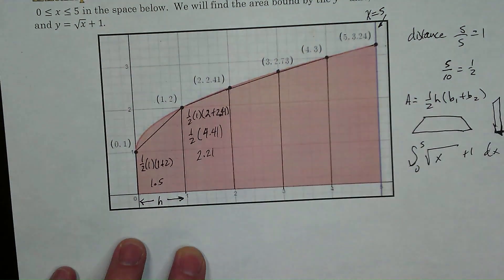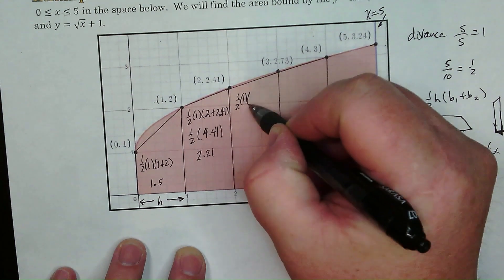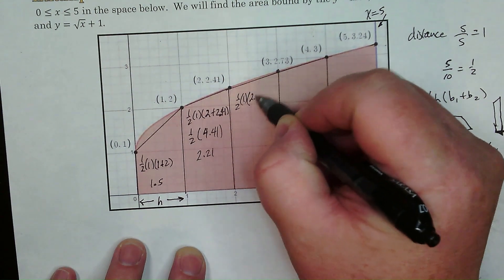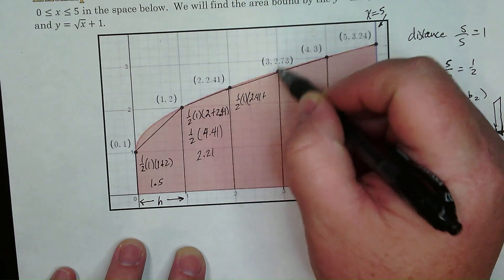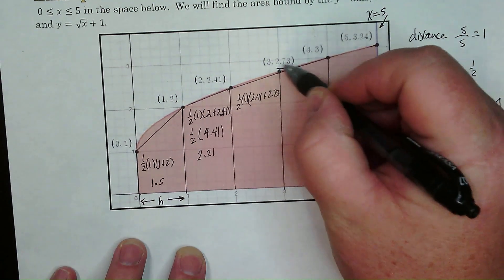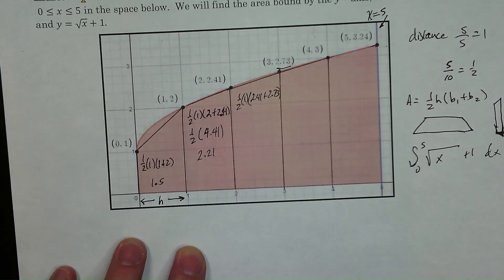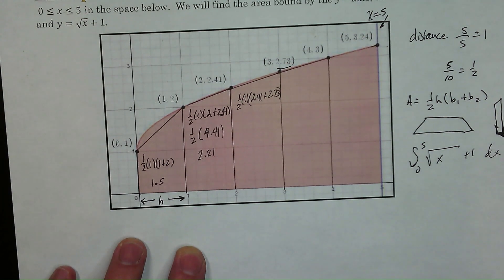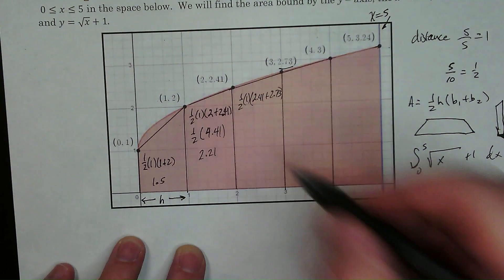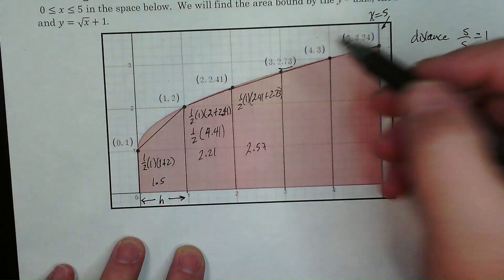I'm going to round to two, three significant figures. So one half of one of course, and then 2.41 plus 2.73. The y coordinate is the height of every single one. You see? So we have is 2.41 plus 2.73. I'll do this on the side over here. You can just take my word for it. And we get 2.57.